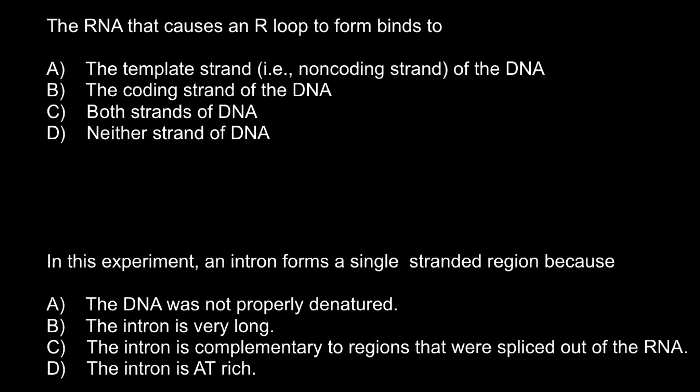Hello and welcome to Nikolai's genetics lessons. Today I have prepared two multiple choice questions for you. As usual, I recommend you stop the video here, read the questions and answers, choose the correct answers, and when you're ready you can run the video again and compare your answers with my answers and explanations. Here is the first question: the RNA that causes an R-loop to form binds to — and here are the four answers to choose from. First of all, I know that many people don't know what an R-loop is.